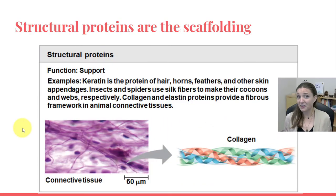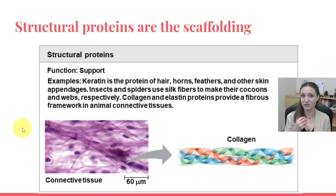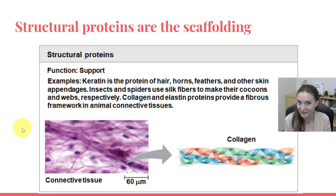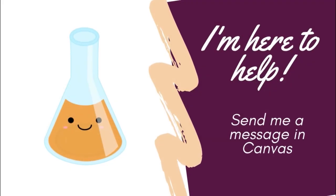Structural proteins kind of keep everything together — they're scaffolding within cells and between cells. Have you ever thought about how all of our trillions of cells stick together? Why are we not just a puddle of goo? Why do we have this specific structure to how our cells are ordered? Proteins. Proteins hold all the stuff together. Things like collagen and keratin are structural proteins that keep all of our cells together and provide protection for those cells as well.